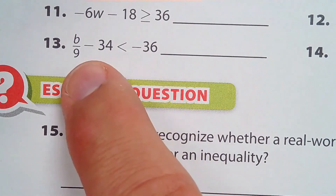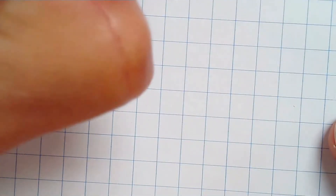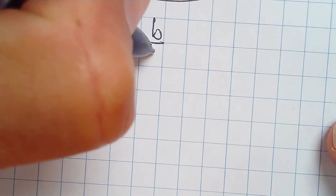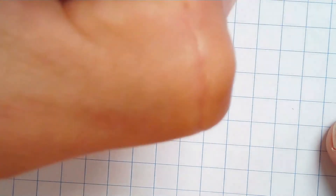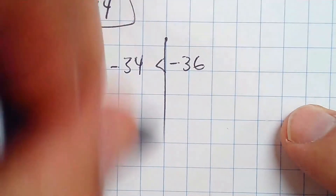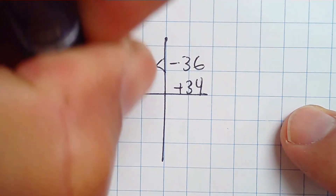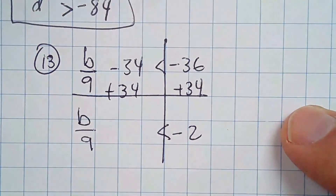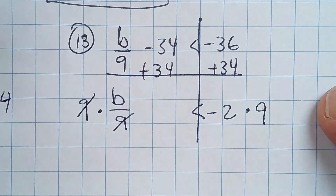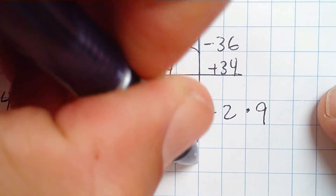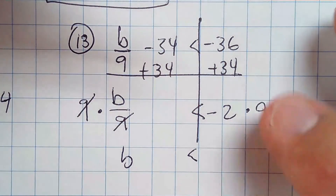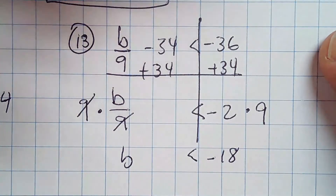Number 13: b divided by 9 minus 34 is less than negative 36. Adding 34 to both sides gives b divided by 9 is less than negative 2. Then multiply both sides by 9 — we don't switch the sign because we multiplied by a positive — and negative times positive is negative, so B is less than negative 18.